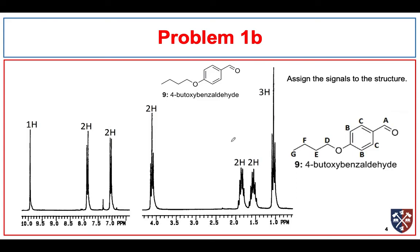The next problem is similar — in this case we're asked to assign our protons to the signals in the spectrum. I've labeled all of the protons from A to G, starting at the furthest upfield. Proton A is an aldehydic proton; we've already said we expect it to come way out at high ppm, and there it is.